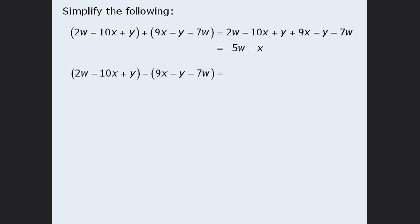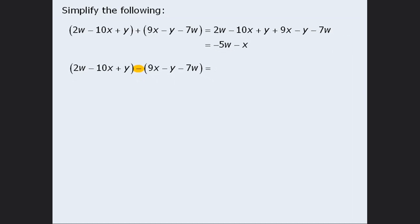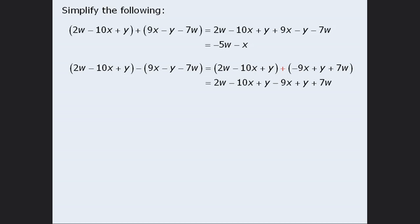In this next example we are taking one expression in parentheses and subtracting another expression in parentheses. To handle this we will first turn the subtraction into an addition. The terms in the first set of parentheses are left as is, but we will replace all of the terms in the second set of parentheses with their opposites. So we rewrite 9x as negative 9x, minus y as plus y, and minus 7w as plus 7w. At this point we are adding two expressions in parentheses, so we simply remove the parentheses and can simplify the expression.